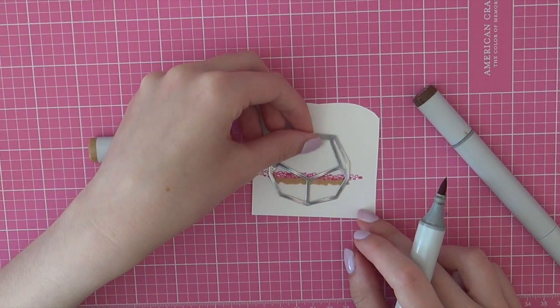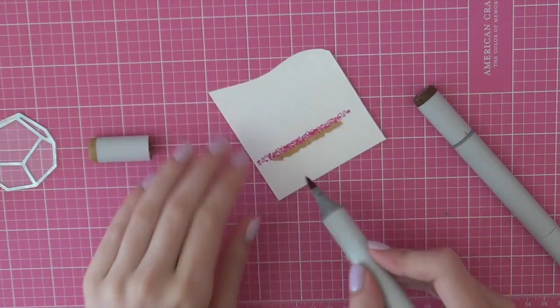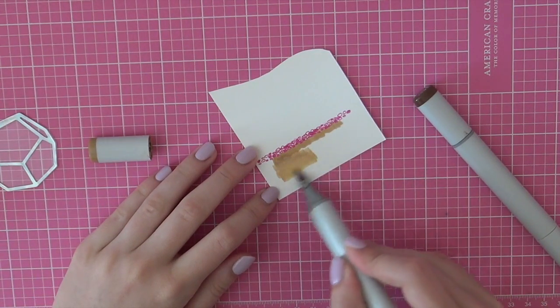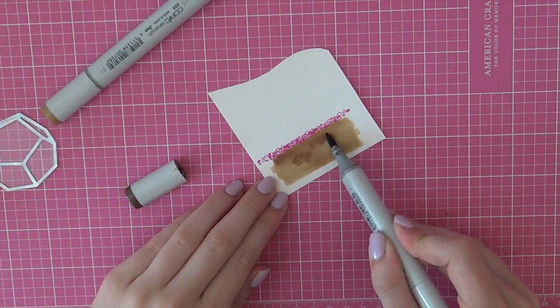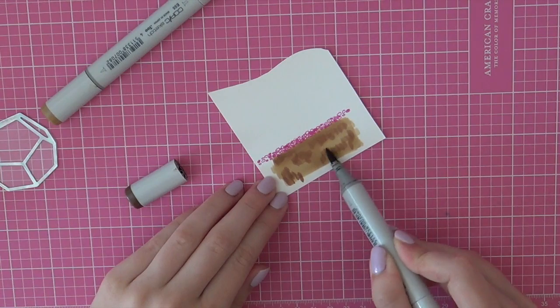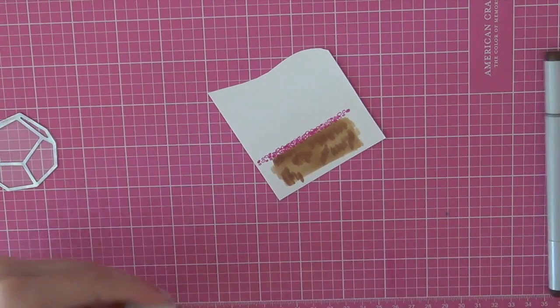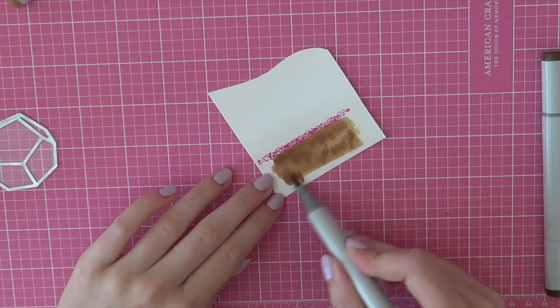So for the soil of this in the terrarium I am going to use some Copic markers. So I am using the E55 Copic marker first, just adding that as my first color. And then I am going in with the E57 Copic marker and then I am blending that all together using the E55 marker again.